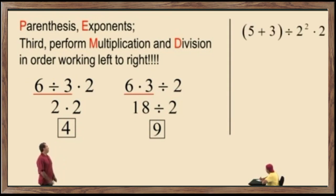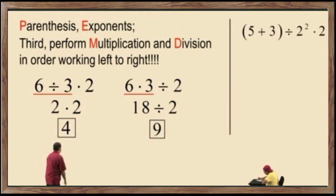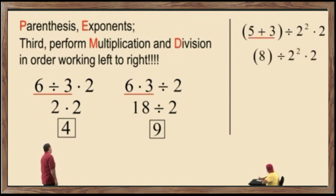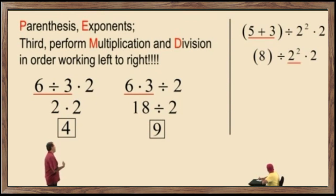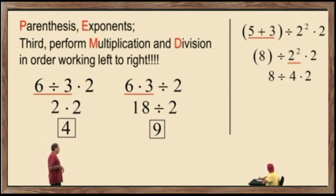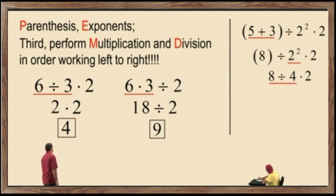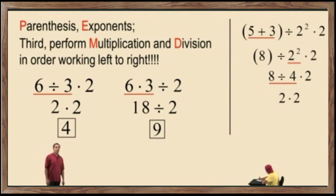Over here, we have parentheses, a division, an addition, and an exponent. We work the parentheses first: 5 plus 3 is 8. Bring down our work. Now we evaluate the exponent: 2 squared is 2 times 2, which is 4. Bring down the work — we don't require parentheses around that 8. Now we have division and multiplication. Division comes first working left to right, so 8 divided by 4 is 2. 10 times 2 is 4. That is our correct answer.